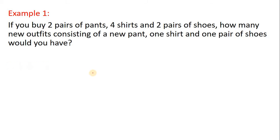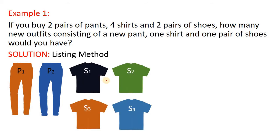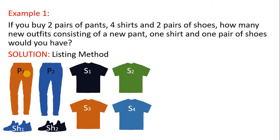Let's start with the listing method. I'm going to use some abbreviations. For the pair of pants, I'll be using P1 and P2. For the shirts, I'll be using S1 up to S4. And for the two pairs of shoes, I'll be using SH1 and SH2. To list the combinations, say for example: P1 paired with shirt number one, and then paired with shoes number one — so that would be P1, S1, and SH1.